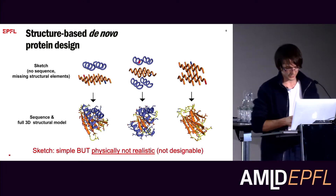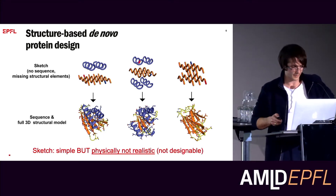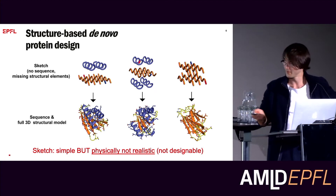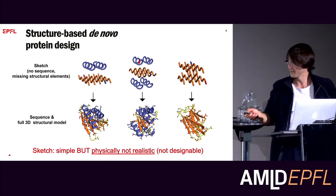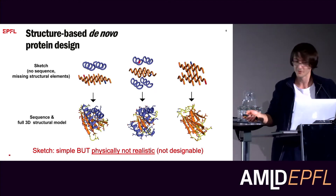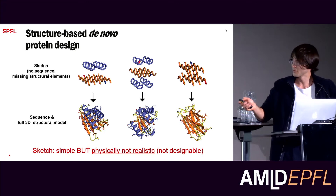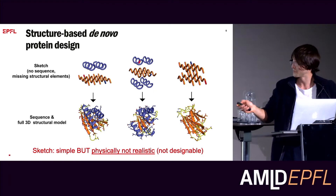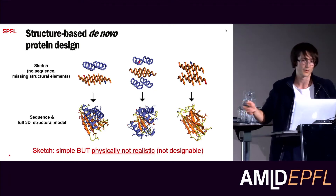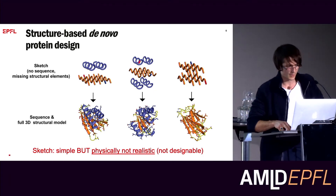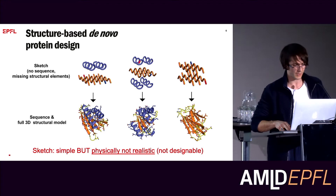Those sketches are simple but not physically realistic. We don't have a sequence, so we don't have side chains. We also have a lot of missing elements, such as the yellow loops — the unordered elements of the protein structure.